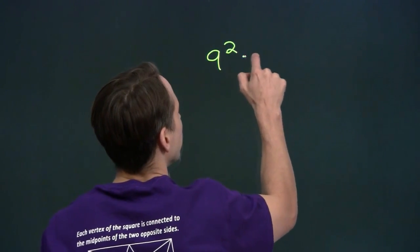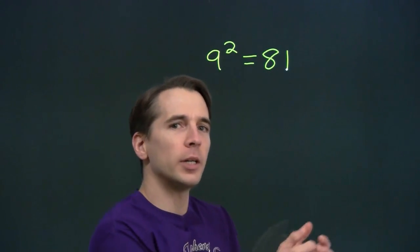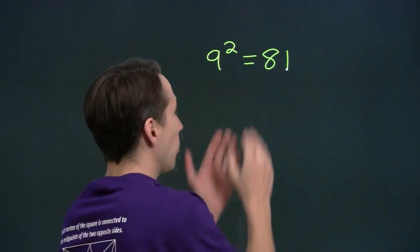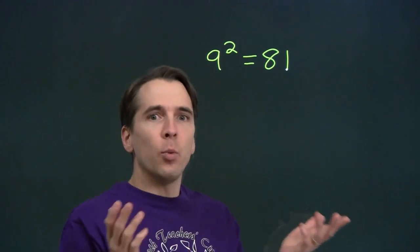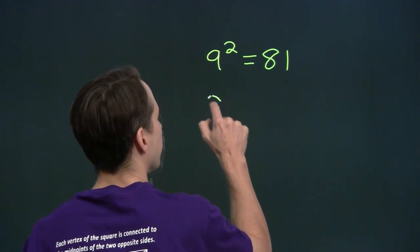9 squared equals 81. Sometimes we want to go the other direction. We start with the 81 and we ask, what number did we square to get 81? We have a special notation for that, too.